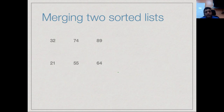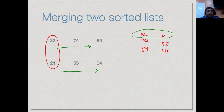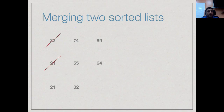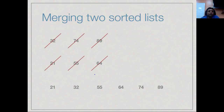Let us look at a simple example. Suppose we want to merge these two sorted arrays — both are in ascending order. We look at the topmost elements: the smaller one, 21, goes to the new stack. Now we compare 32 and 55 — 32 moves out. Then we compare 55 and 74 — 55 moves out. Then 74 and 64 — 64 moves out. Now the second stack is empty, so we copy the remaining first-stack elements in order: 74 then 89. This is the intuitive merging process, and it works with normal arrays as well.